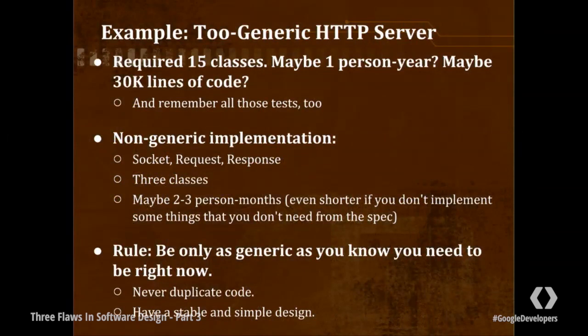I'm not encouraging bad design and saying you should hack things out quickly. What I'm saying is I'm discouraging over-design. The rule that you can apply to resolve this flaw is: be only as generic as you know you need to be right now. And how generic is that? You need to be generic enough so that you never duplicate code, so that your design is simple, and so that your system is stable.